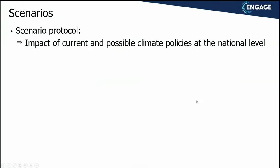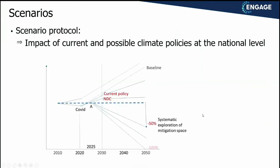In Engage, we defined a systematic protocol to do that analysis. It's quite difficult because we're not only looking at different countries, we're also looking at different models in different countries. We asked all modeling teams to run a current policy scenario, to look into the NDCs of their own country, and then to run systematically reduction targets in 2050: a 50% emission reduction target, a 100% emission reduction target if feasible in their country, and also a stylized net zero run where the net zero years were specified differently for different countries.